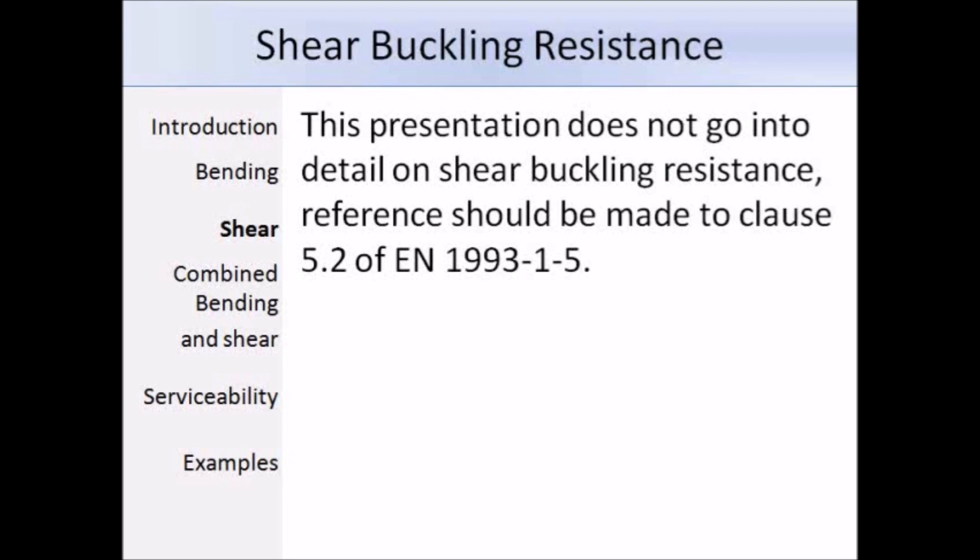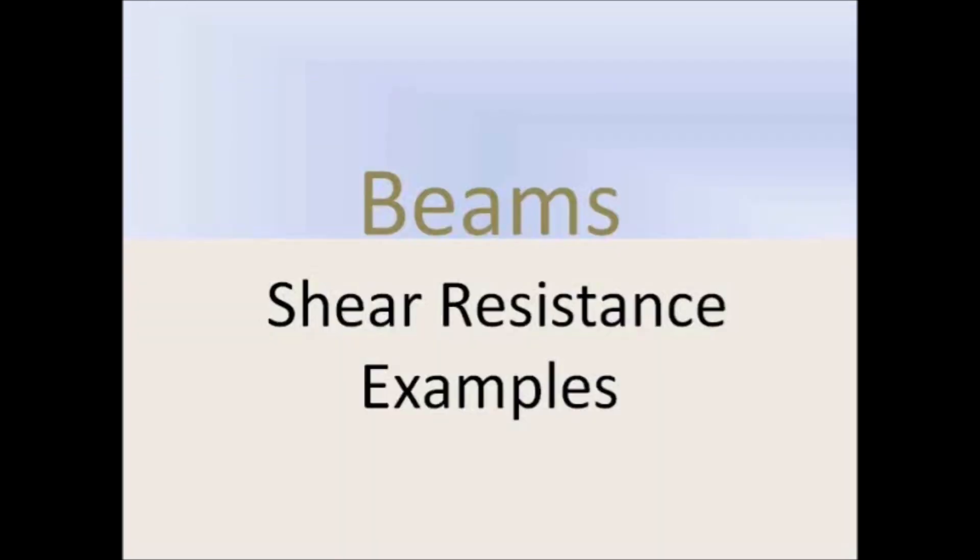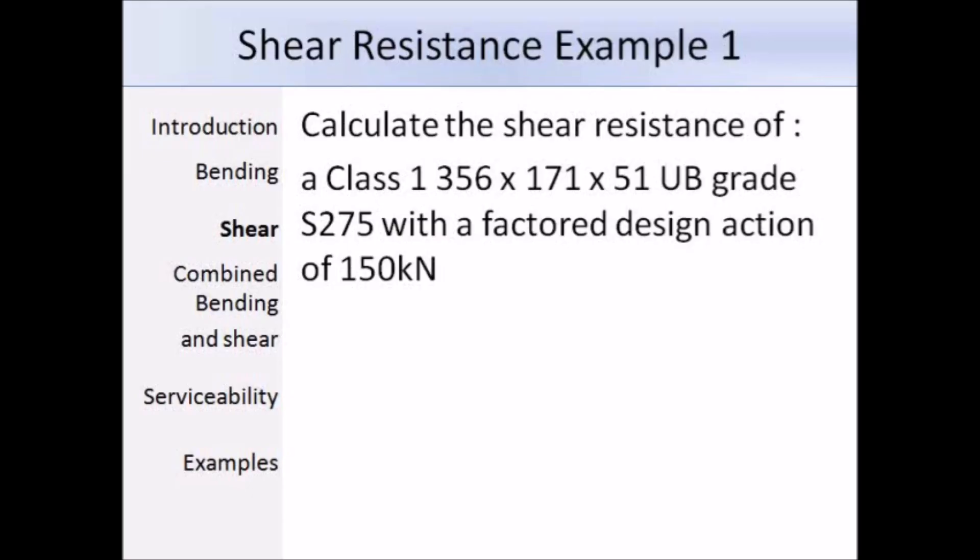Now that we've covered all of the design steps, I'm going to go through a few examples. So this is the first example, and it's asking us to determine the shear resistance of a class 1 356 x 171 x 51 UB in grade S375 steel, with a factored design action of 150 kN.